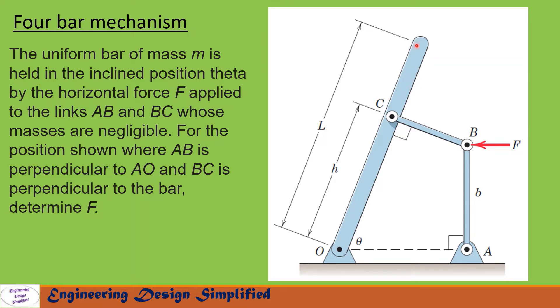In this problem, a uniform bar of mass m and length L is arranged in this position by two links BC and BA, and a force F is applied at point B. The links BC and AB are of negligible weight. Link CB is perpendicular to this uniform bar, and link BA is perpendicular to horizontal. To keep this bar in this position, we need to find the amount of F.